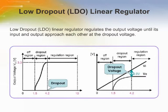As shown in the figure, the working region for an LDO is the regulation region, where it can provide a steady output voltage over a wide range of load current.